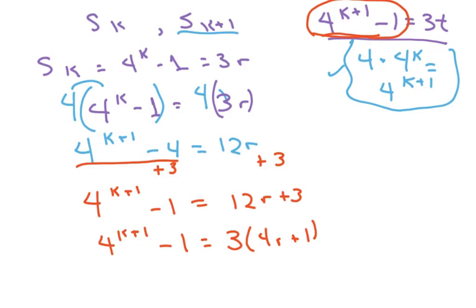Now, what I'm going to do is I'm going to let t equal 4r plus 1. So what we get is 4 to the k plus 1 minus 1 equals 3t, which is our desired result.